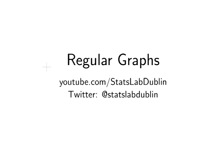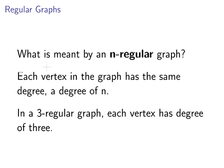In this presentation we're going to look at regular graphs. So what is meant by an n-regular graph? In an n-regular graph, each vertex has the same degree — a degree of n. For example, a 3-regular graph has a degree of 3 at each vertex.